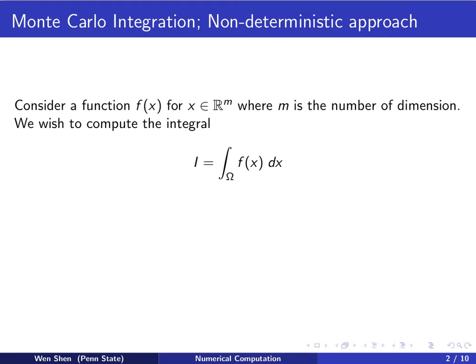So far, all the methods we presented here are for integrations in one space dimension. Most of these methods can be extended to multidimensional problems based on various polynomial approximations to the integrand function. However, the complexity of those algorithms would increase exponentially as one increased the number of dimensions. Here, we introduce a totally different approach, using random numbers instead.